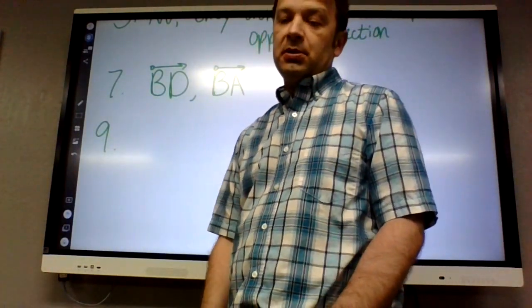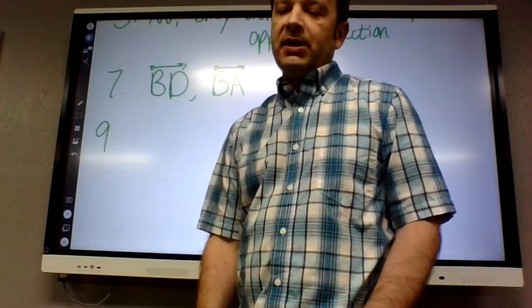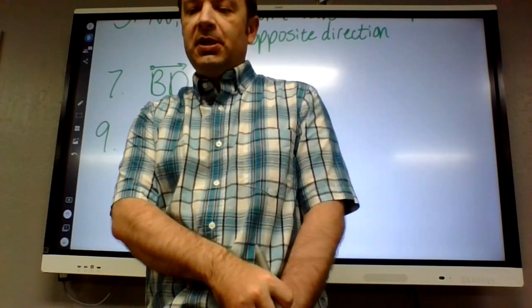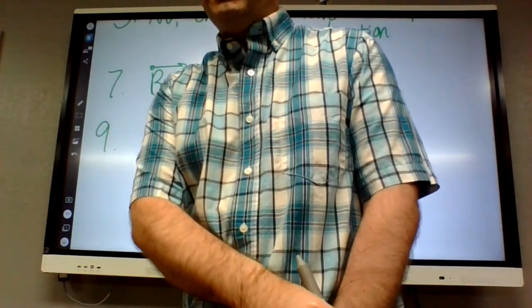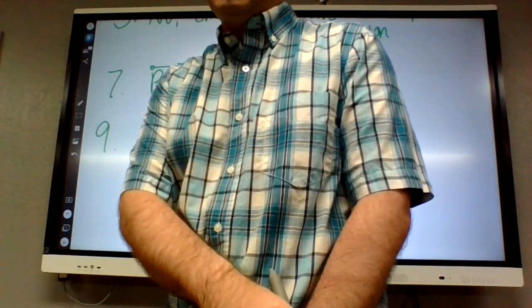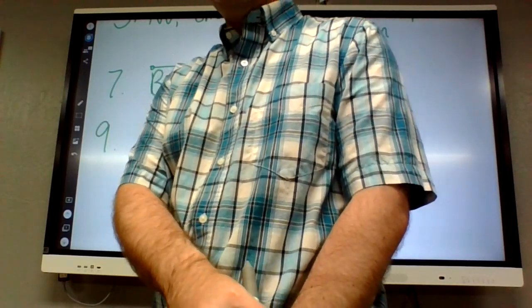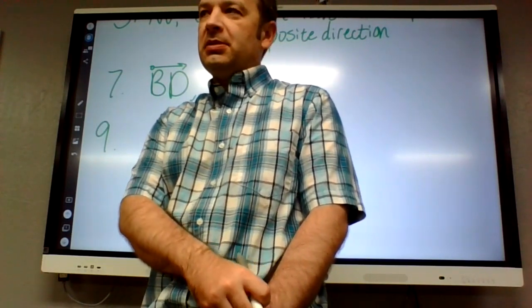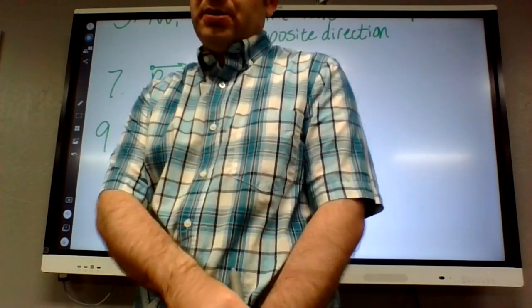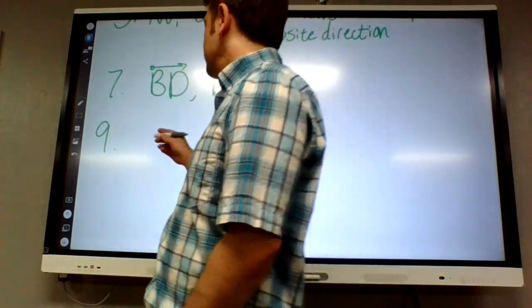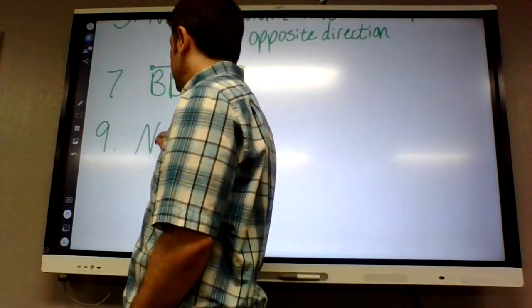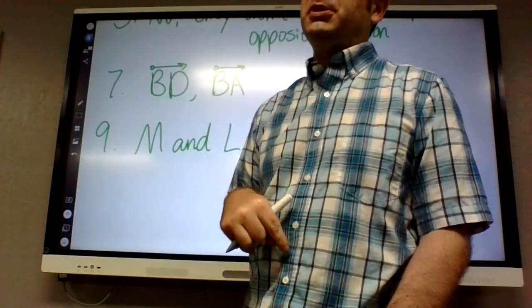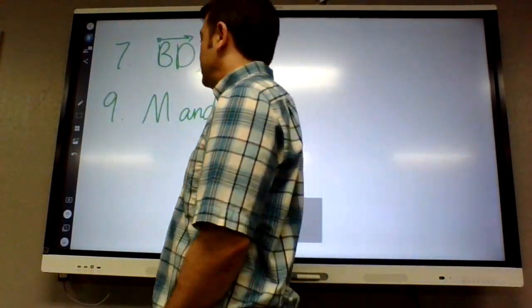Okay, nine. We're down below. Nine kind of refers to number eight. Eight says F is between C and K. So nine says what other points is F between besides C and K? M and L. M and L. Is that all? When it says between, it has to be on the line between. That's what they mean by between.